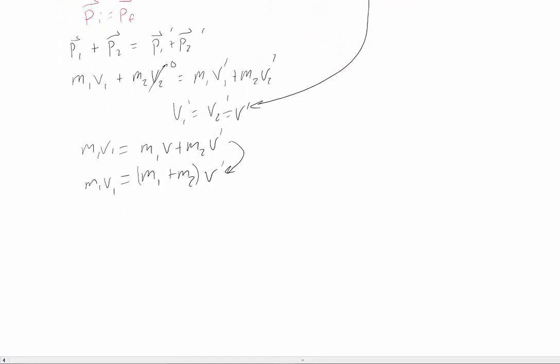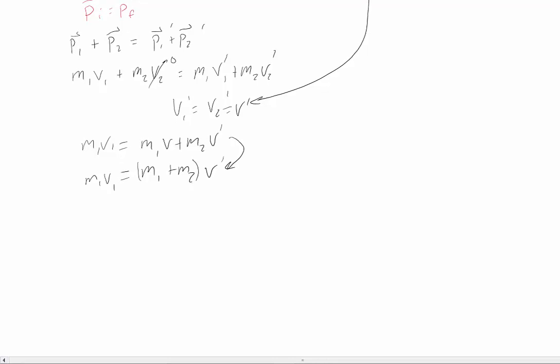So if we go ahead and plug our numbers in, well actually, let's do one last bit of algebra. If I want to know what our final velocity is going to be, I can actually do this. V prime is equal to m1 v1 divided by m1 plus m2. Now we can plug our numbers in, we get 70 kilograms, my initial velocity is 5 meters per second. And we get my 70 kilograms plus 120 kilograms. And if we do that all, we get 350 kilogram meters per second divided by 190. That's approximately equal to 1.8 meters per second at the end.